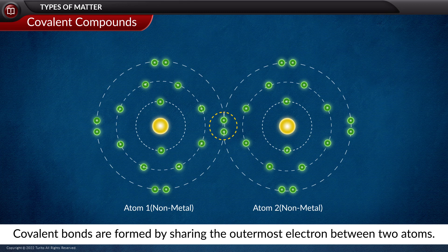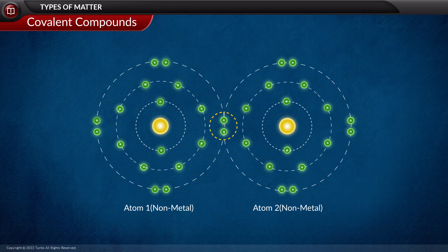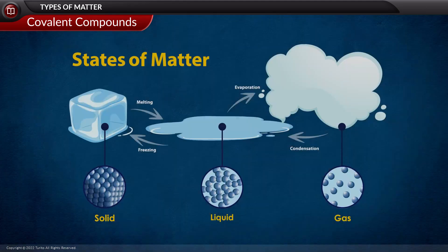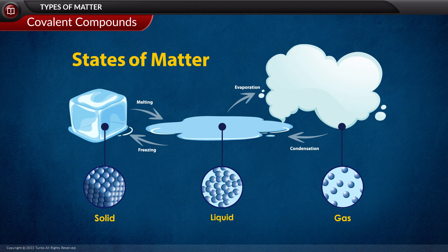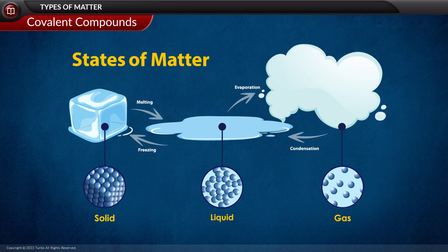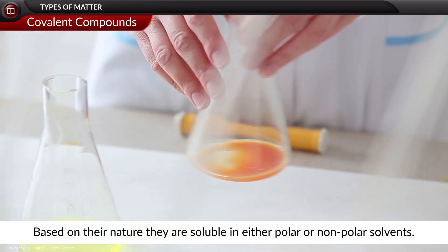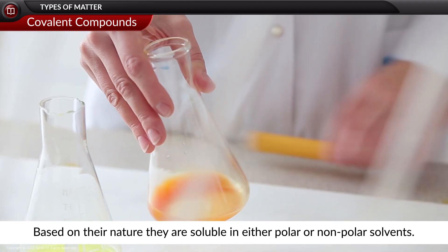Now let us move on to the properties of the covalent compounds. They exist in all three forms at room temperature depending on the level of interaction they have. Based on their nature, they are soluble in either polar or non-polar solvents.